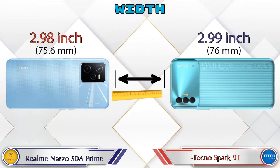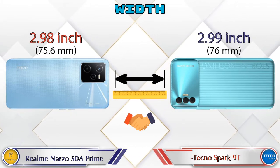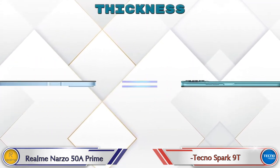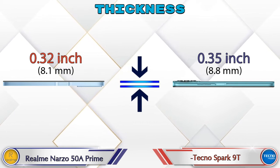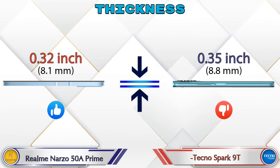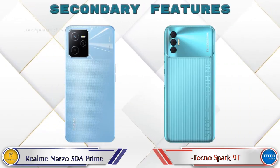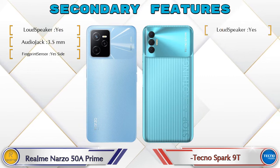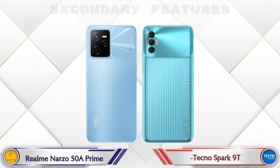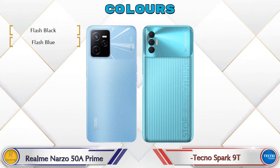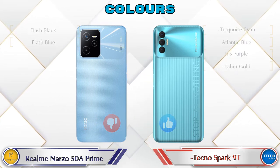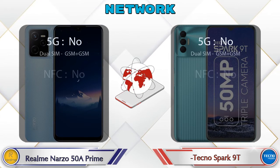The width of the 50A Prime is 2.98 inches and the Spark 90 is 2.99 inches, which are almost the same. Thickness is 0.32 inches on the 50A Prime and 0.35 inches on the Spark 90, making the Spark 90 slightly thicker. For color options, the 50A Prime has 2 colors and the Spark 90 has 4 color options available.